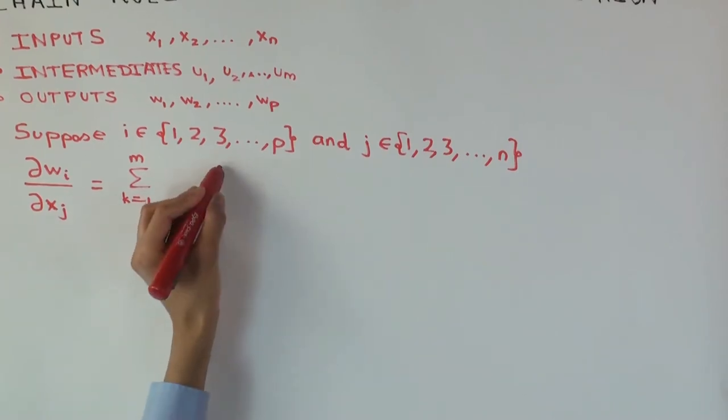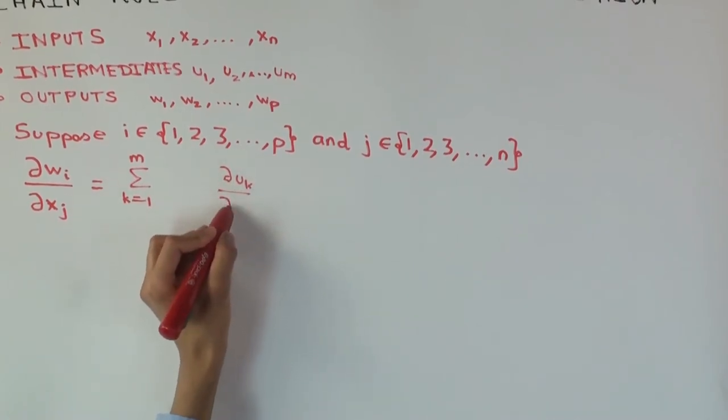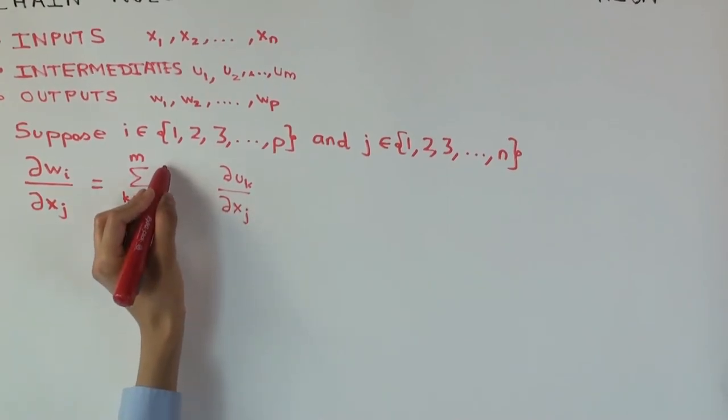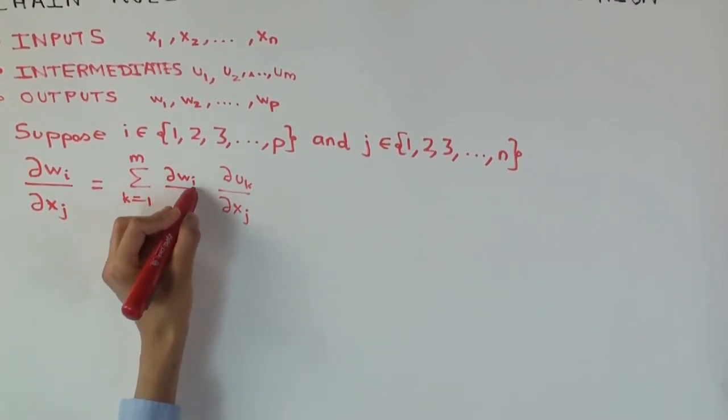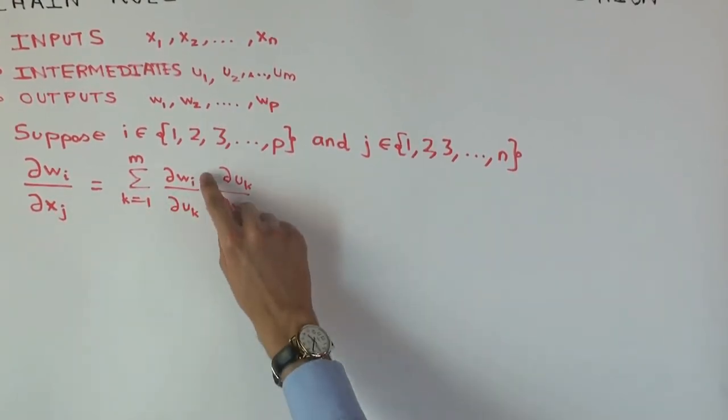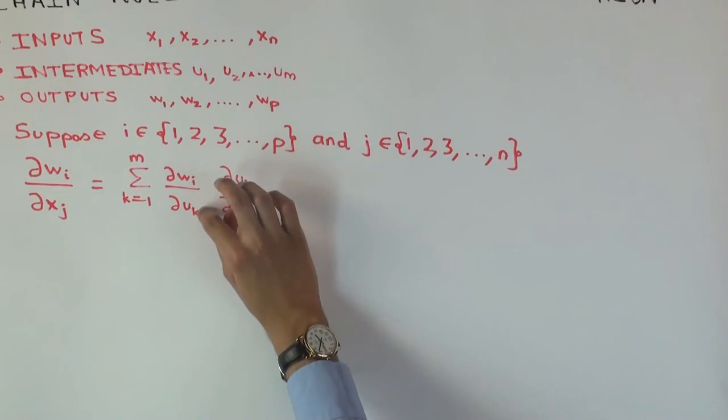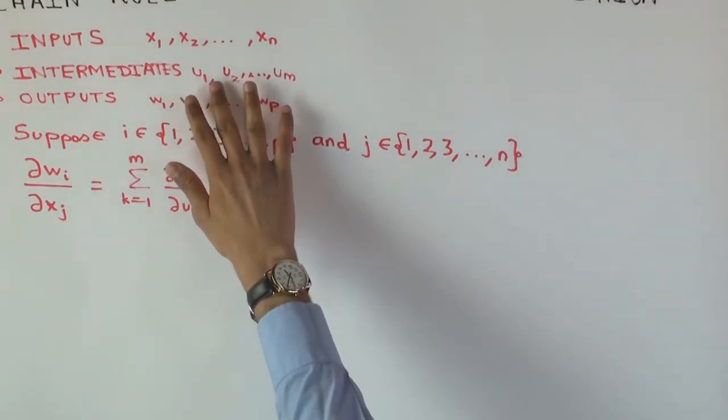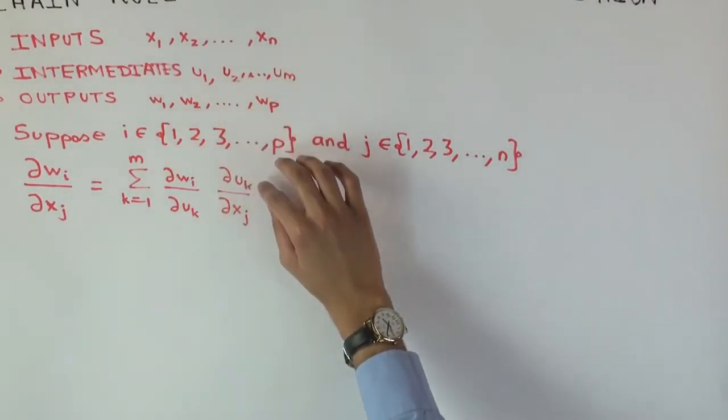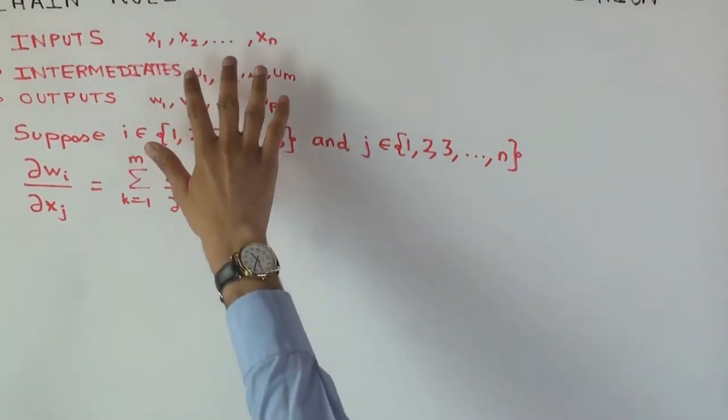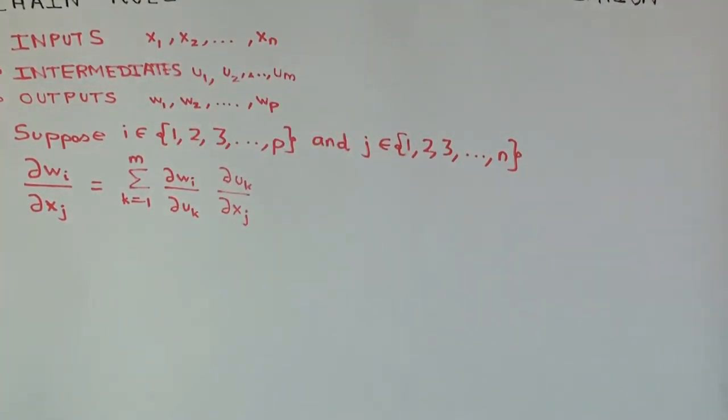That's the second part. I mean, that's fine, it's commutative, so you can write it either way. The first part would be the partial derivative of wi with respect to uk. Now what's happening here: this is the partial derivative of wi with respect to uk holding all the other u's constant, and this is the partial derivative of uk with respect to xj holding all the other x's constant.